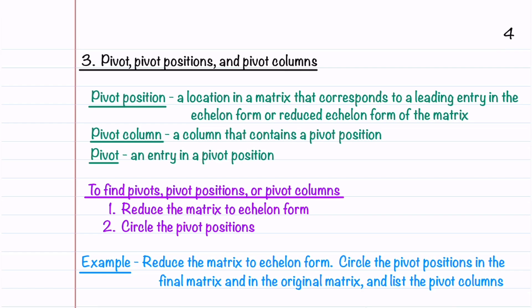We just have a few more definitions to learn before we can learn the row reduction algorithm. Let's learn what pivot, pivot positions, and pivot columns are. A pivot position is a location in a matrix that corresponds to a leading entry in the echelon form or reduced echelon form of the matrix. A pivot column is just a column that contains a pivot position. A pivot is an entry in a pivot position. To find pivots, pivot positions, or pivot columns, we first need to reduce the matrix to echelon form, and then circle the pivot positions.